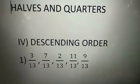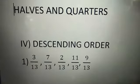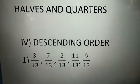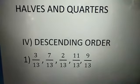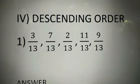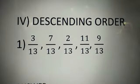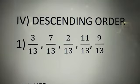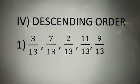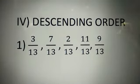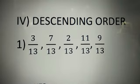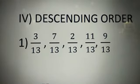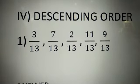In this session, we are going to study about descending order and addition under the chapter halves and quarters. In the last session, we studied about ascending order. Ascending order is nothing but the smaller number to the greater number. Descending order is greater number to smaller number.